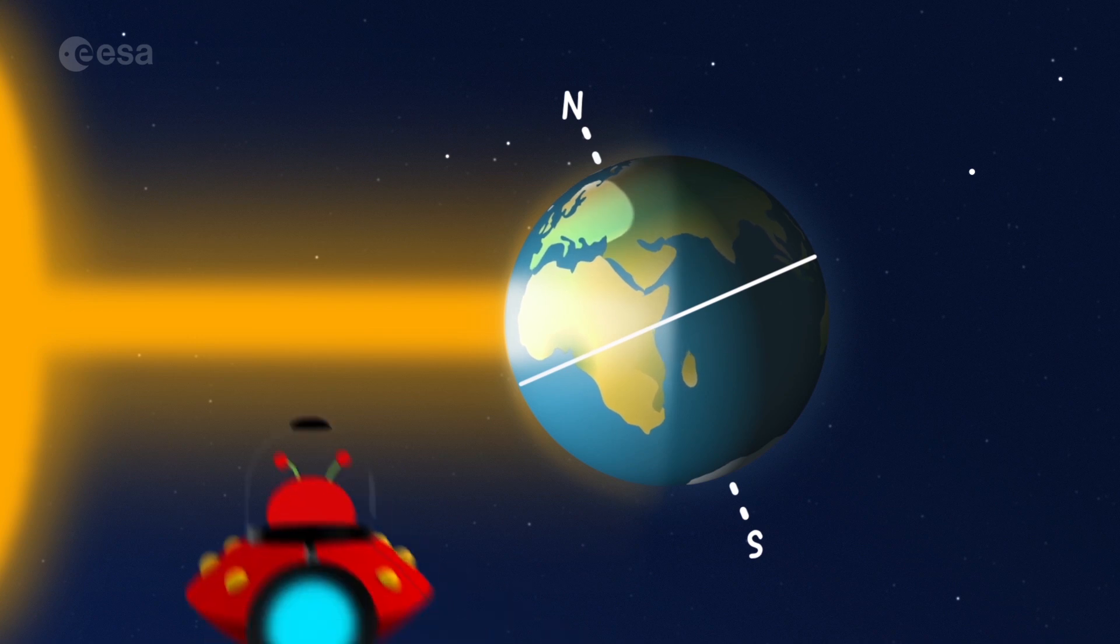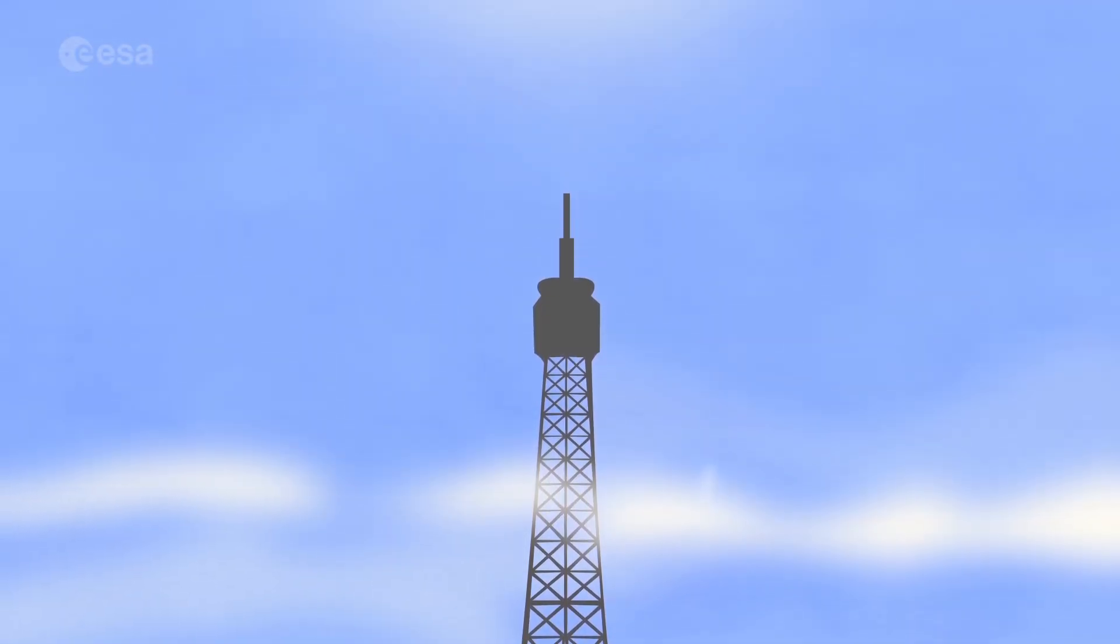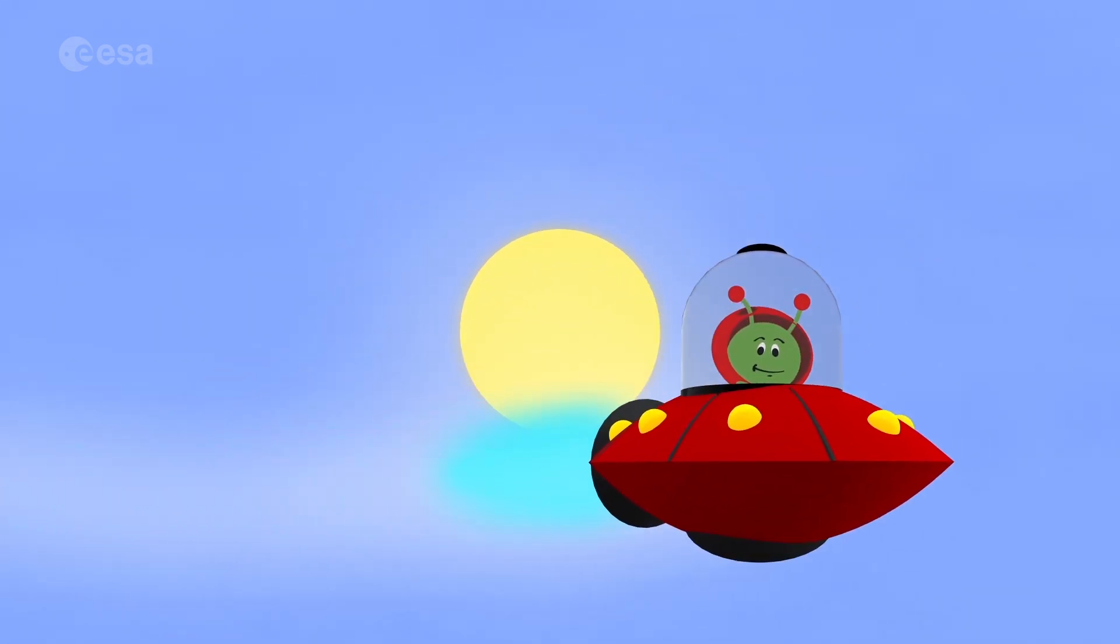For example, in Europe, when the northern hemisphere is tilted towards the sun, it's summer there. The sun appears to be very high in the sky. Days are longer and warmer. Hooray!